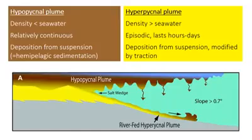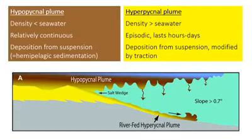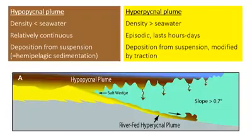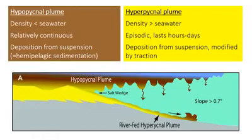Sedimentation in the delta front, and also in the prodelta to some extent, is dominantly sourced from plumes of sediment-rich water that comes out of the river mouth. There are two types of plumes characterized by their density. Hypopycnal plumes have a density less than seawater. Normal river flow, which contains a little bit of suspended sediment, is typically hypopycnal, and therefore it spreads out in a plume at the surface of the ocean. It loses energy due to friction, gradually depositing sediment from suspension — a fairly continuous rain of fine-grained hemipelagic sediment, often mud or silt-rich, and you're not going to get sand in suspension out this far.